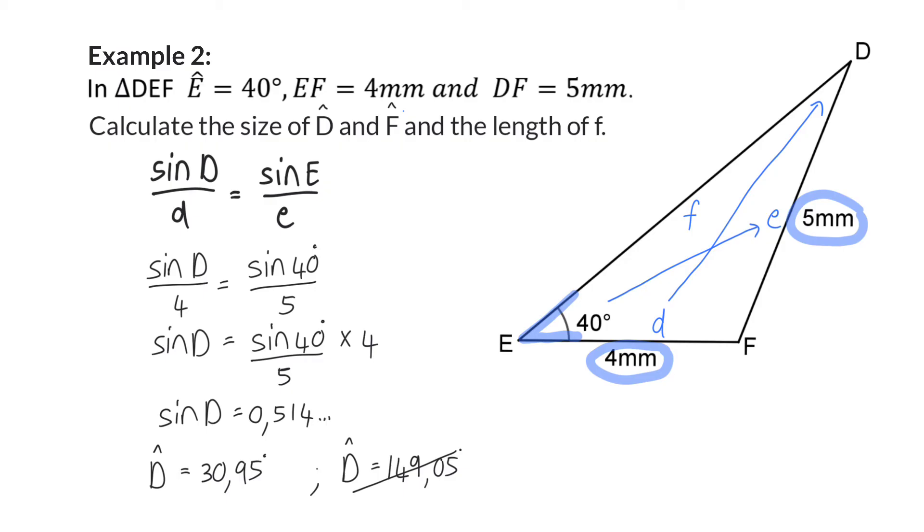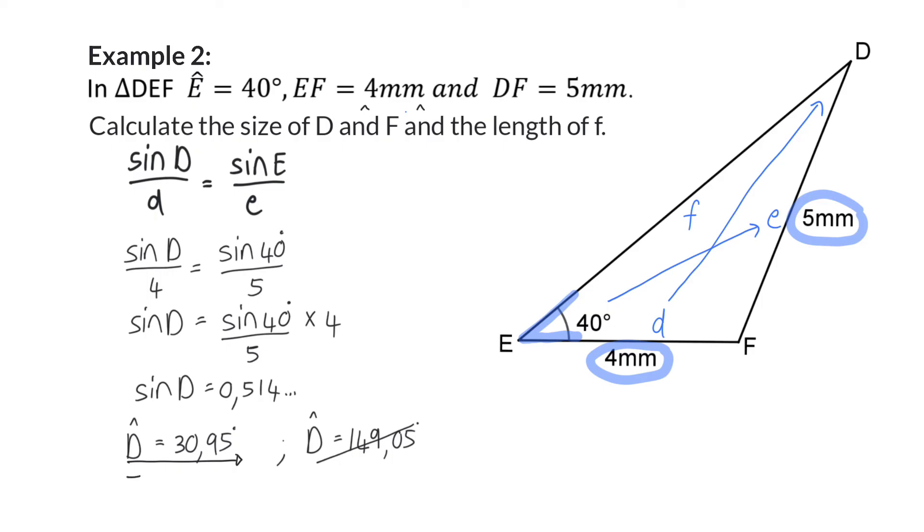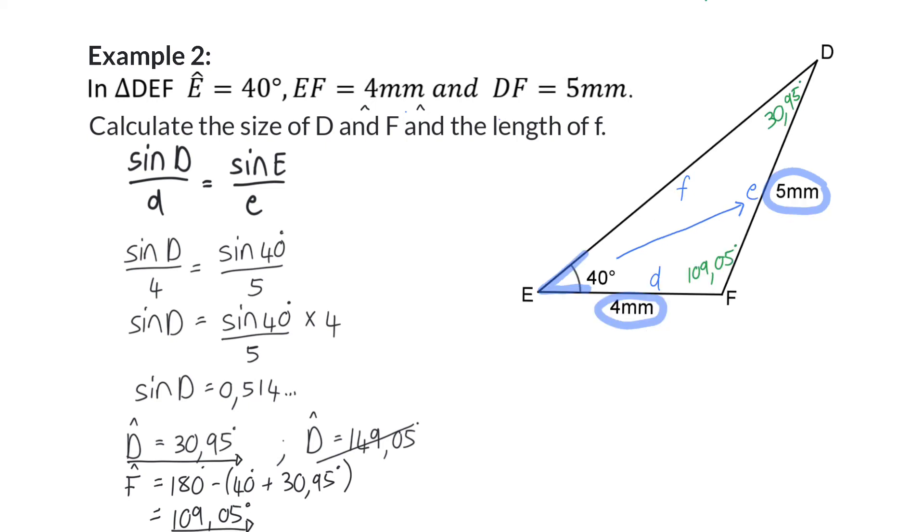Therefore, there's only the one possible answer for angle D. To calculate the size of angle F, we are then going to use interior angles of a triangle and say 180 degrees minus the 40 for angle E and the 30.95 for angle D. Therefore, angle F will be equal to 109.05 degrees.